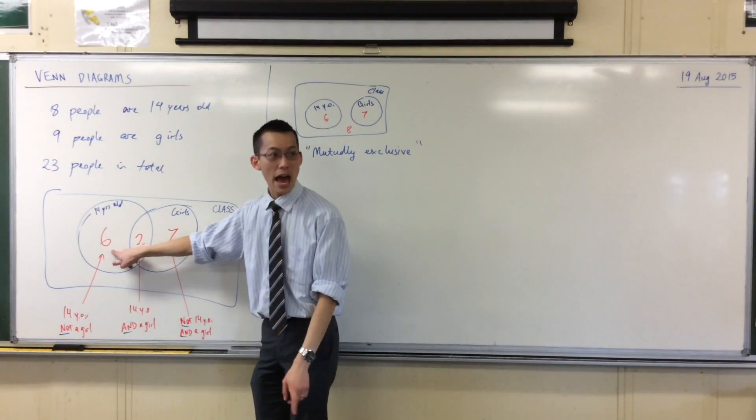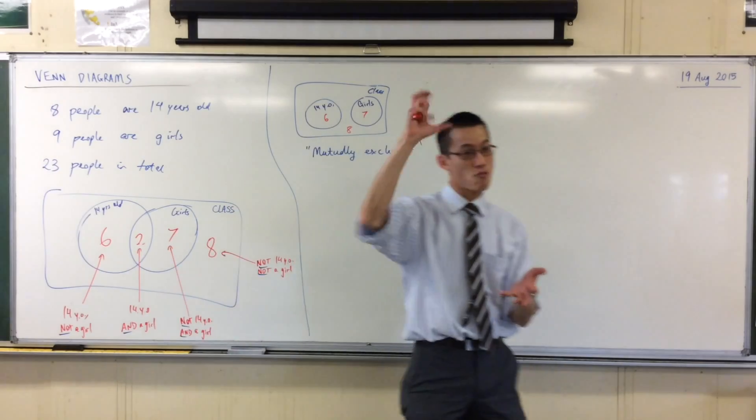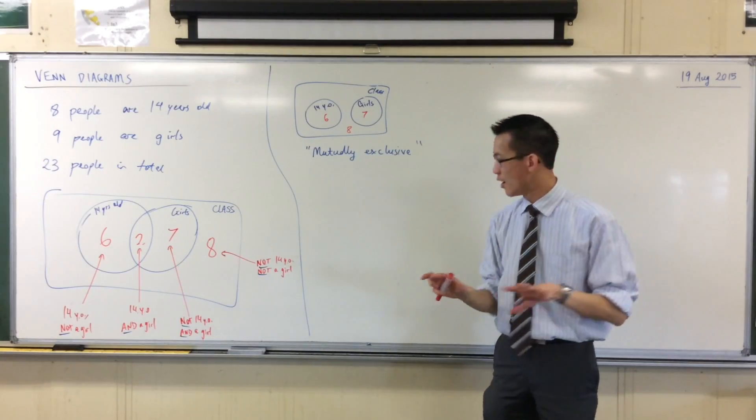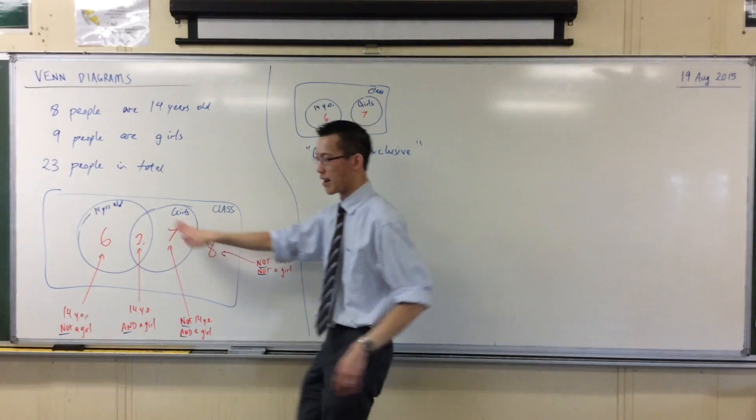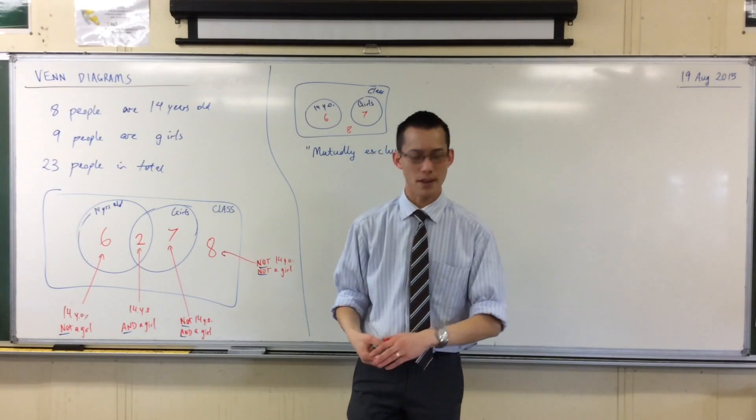So how many people are 14 among just the boys? It's going to be 6 out of 14. So you can start to change the numerator, your favorable events. You can start to change the denominator, which is the sample space, based on whatever combination of these and language is there in the question. So read really carefully.